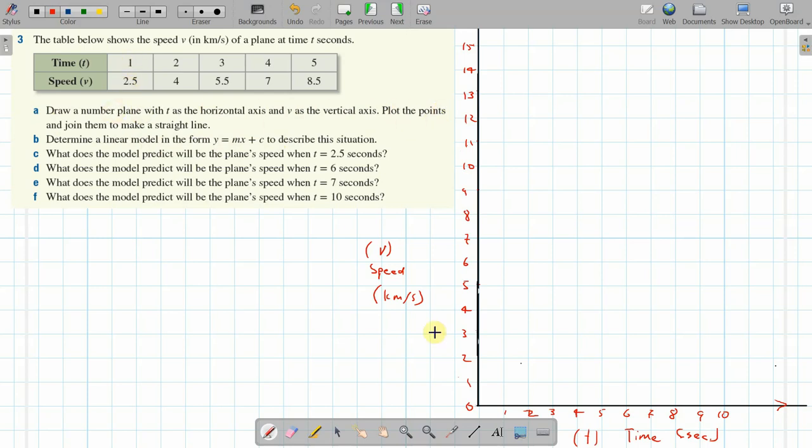A time of one and a speed of 2.5, a time of two and a speed of four, a time of three and a speed of 5.5. It took me a little while to work out the scale of these axes. Just be careful because you've got to have enough space to fit everything in.